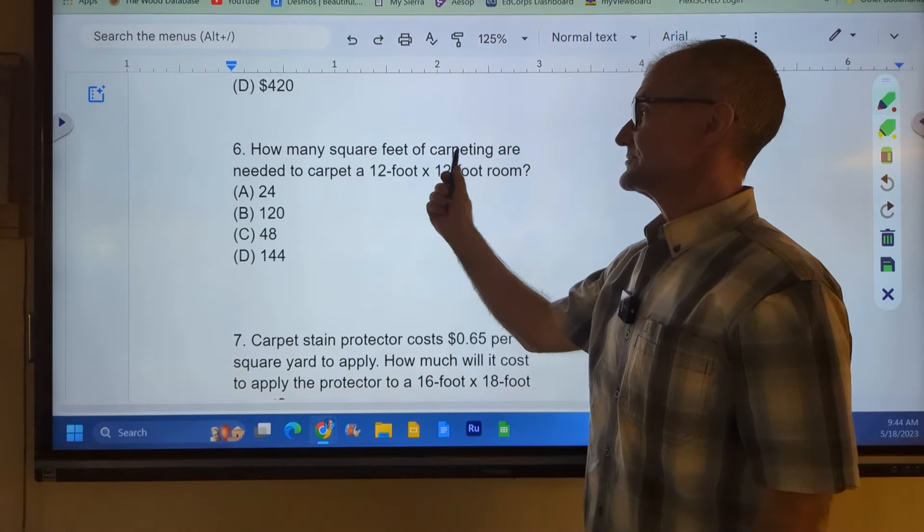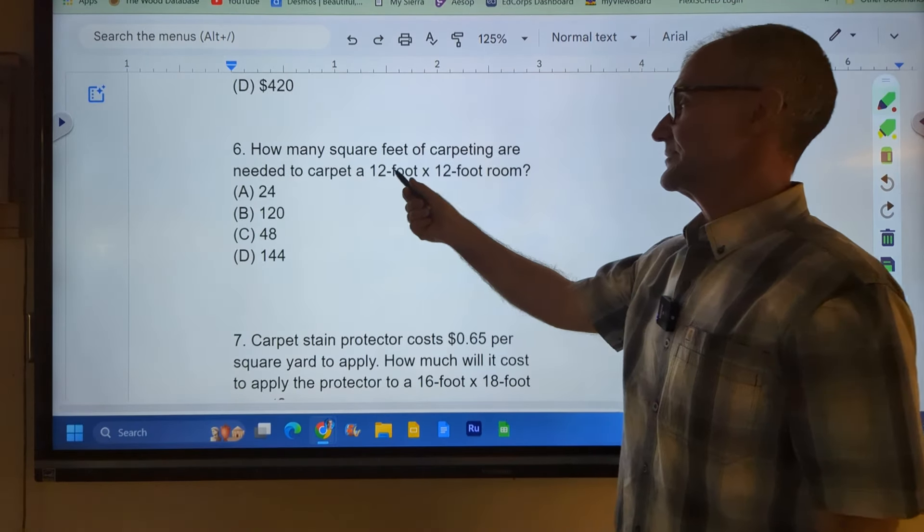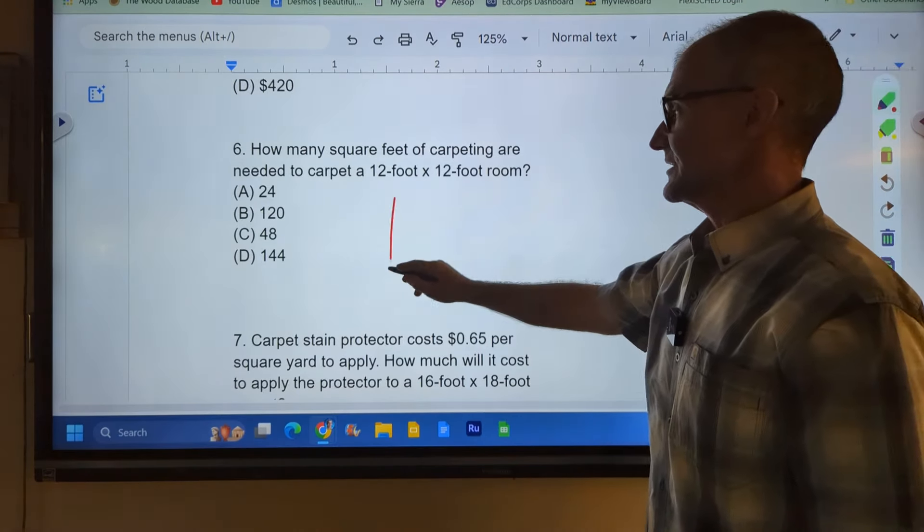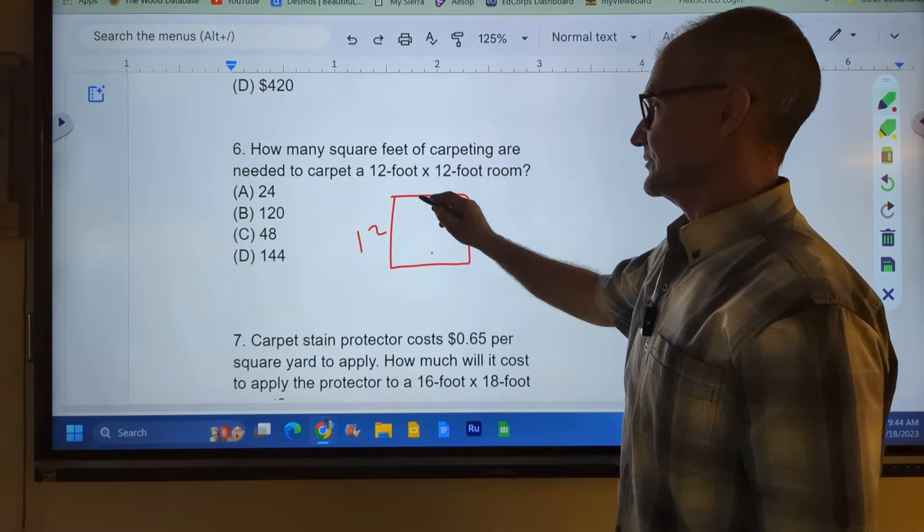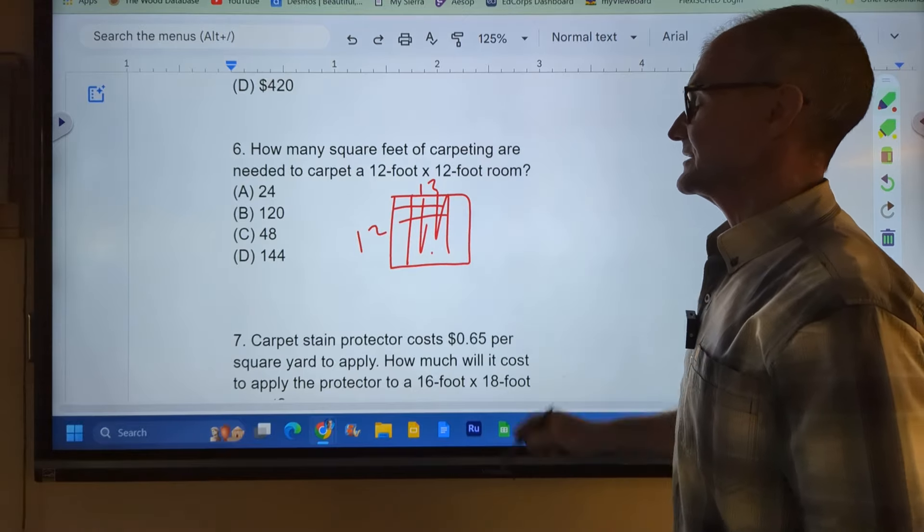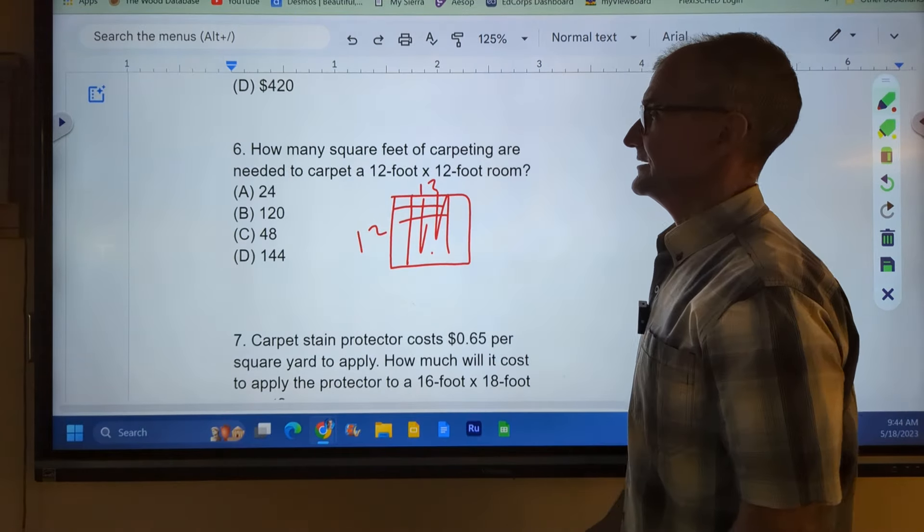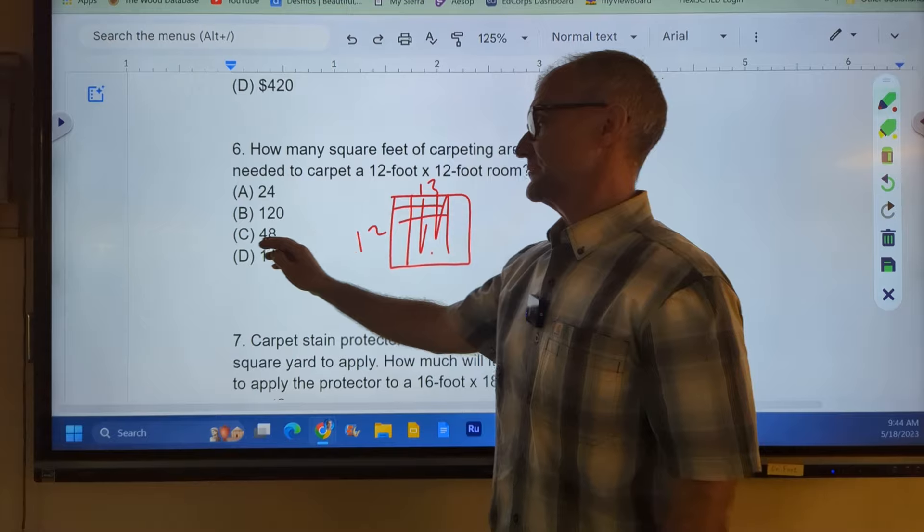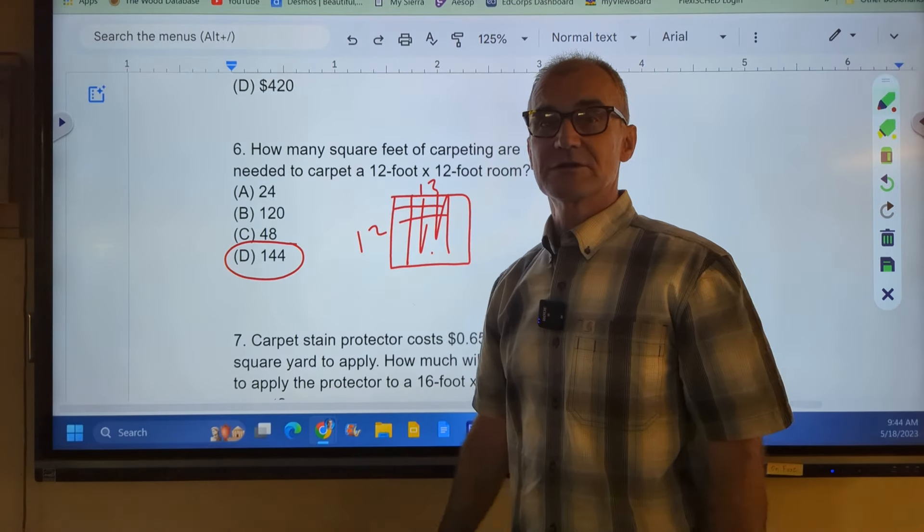Number six. How many square feet of carpeting are needed to carpet a 12 by 12 room? So I have a room that's 12 by 12. It's going to be 12 little boxes by 12 little boxes. I multiply that to find area and I get 12 times 12, 144 square feet.